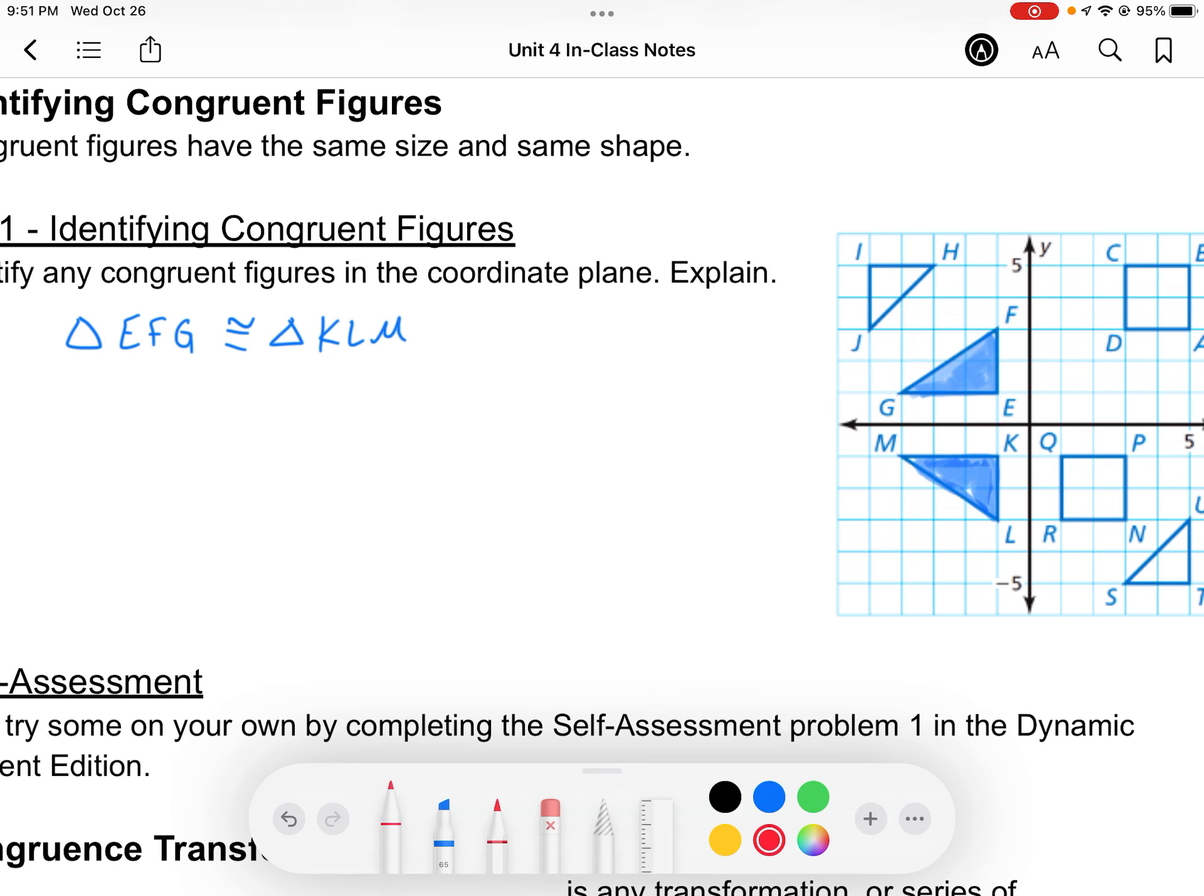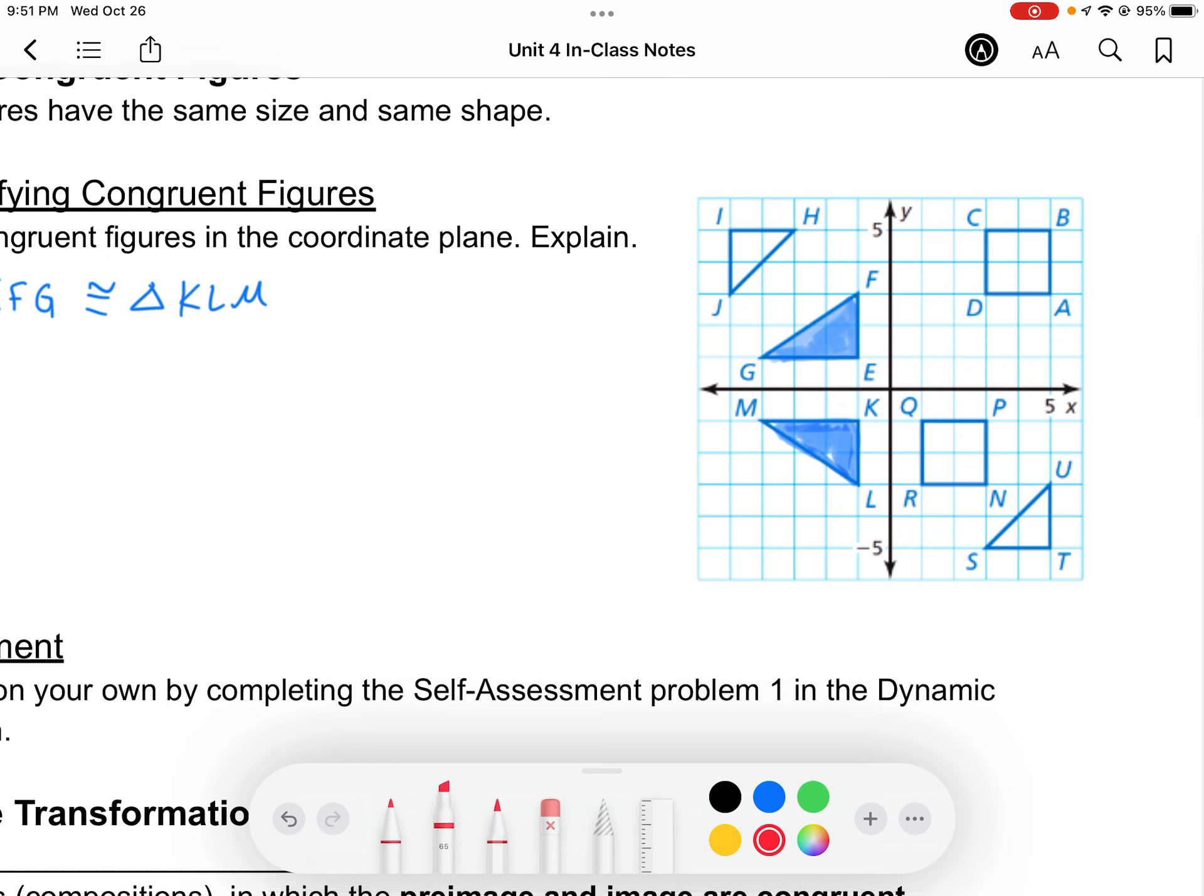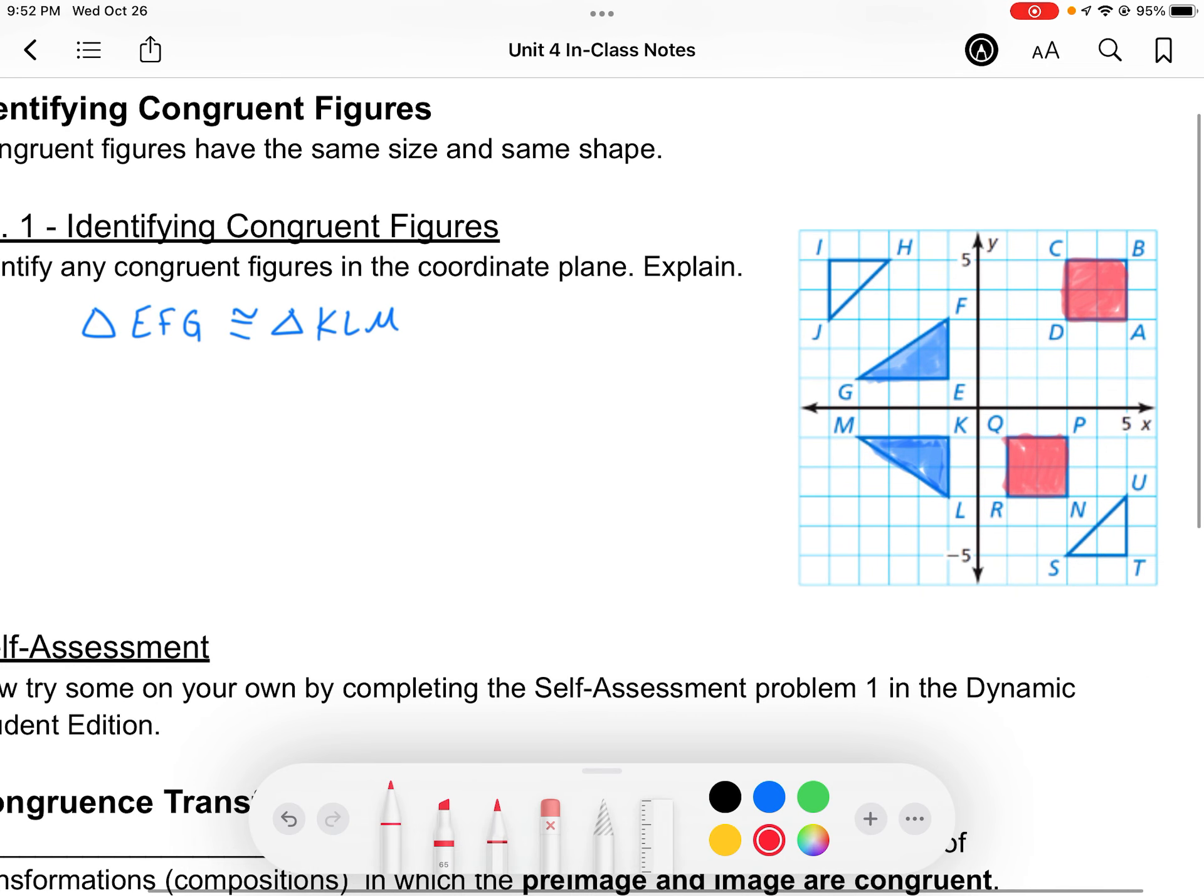Perhaps you didn't notice that one first. Perhaps you noticed the squares first. You may have noticed this square is congruent to the other square. I could call that top one square ABCD. That has to be congruent to its counterpart NPQR.